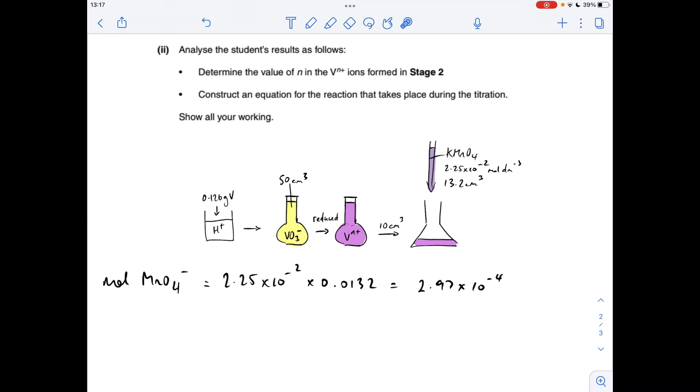So the first thing I've done is worked out the moles of the MnO4 minus ion in the KMnO4 - concentration times the volume in decimeters cubed - 2.97 times 10 to the minus 4.